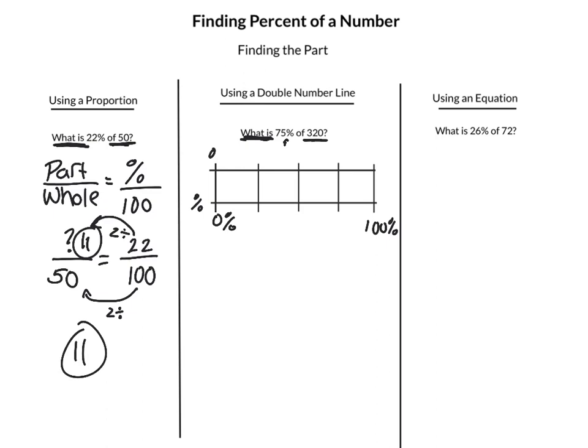Since our whole is 320, that's going to go with the 100 percent. Now since we have 75 percent as the percent, we can divide 100 into quarters. So we can have 25 percent here, 50 percent here, 75 percent here. Then we need to take 320 and divide it into four pieces, just like we did with 100, and that's how we're going to keep it equivalent along this double number line.